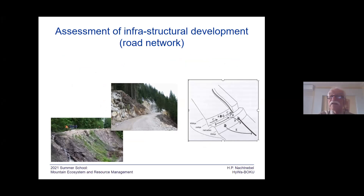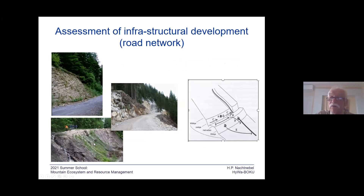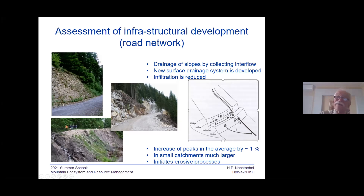What are the consequences of the road network? As you can see here, this is typical for the region: first you generate erosion, and secondly you cut the slopes, draining them. On the side of these access roads there is a water collector which collects all the water and releases it somewhere. This is how it is reflected in the model. The conclusion is that in general it increases the flood peak by about 1%, but in small sub-catchments it could be much larger. Erosive processes have not been explicitly considered here.